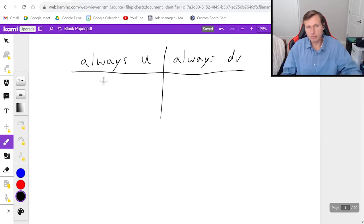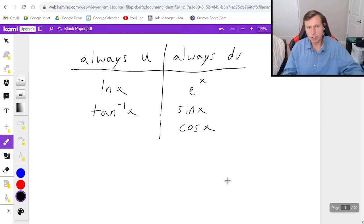For instance, if you ever see a natural log of x, that will always be your u, and if you see an arc tangent of x, that will always be your u. Similarly, if you see an e to the x, then that will always be your dv. Or if you see a sin x or a cos x, that's also in the dv family. So let's look at one.